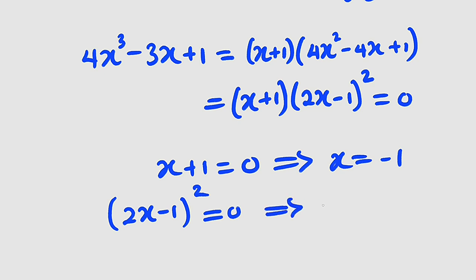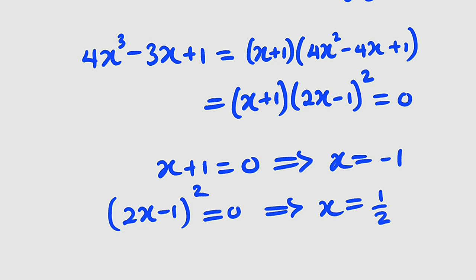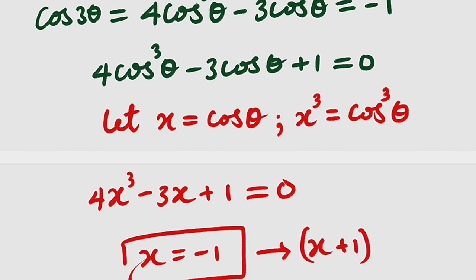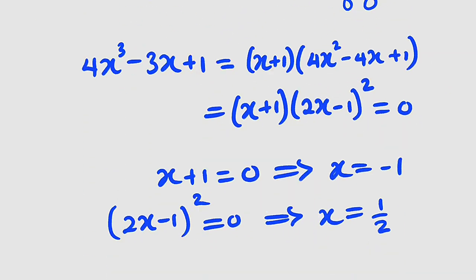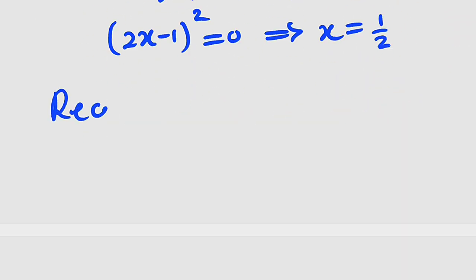Solving: take negative 1 to the other side — it becomes positive 1 — then divide both sides by 2, giving x equals 1 over 2. Recall that x was cosine theta.